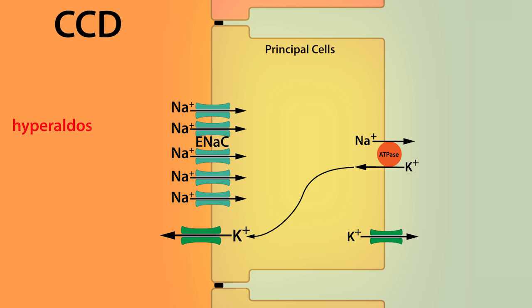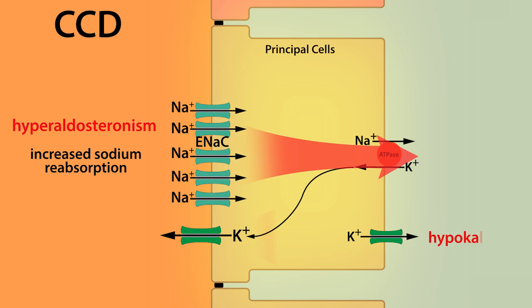For example, hyperaldosteronism, which is the excess release of aldosterone from the adrenal cortex, leads to increased sodium reabsorption and hypokalemia. Likewise, Liddle syndrome, which are mutations that lead to increased ENaC number, lead to increased sodium reabsorption and hypokalemia.